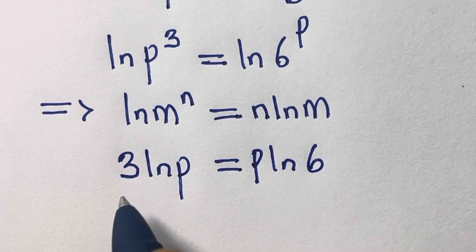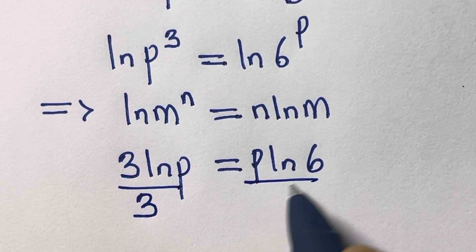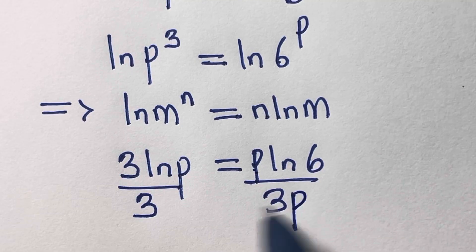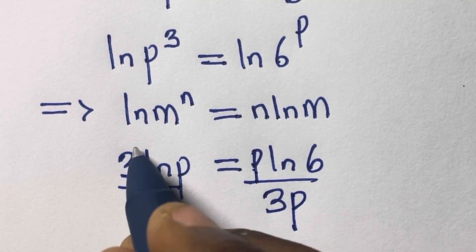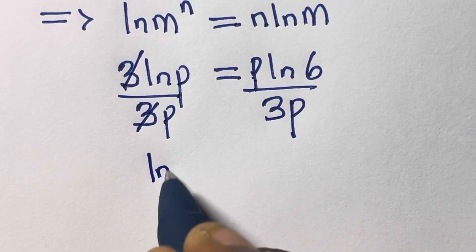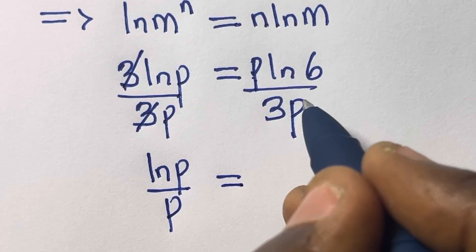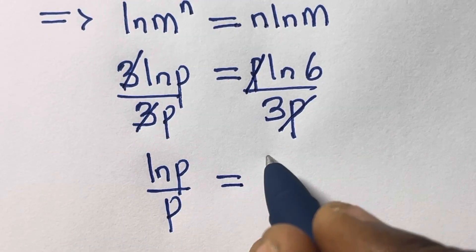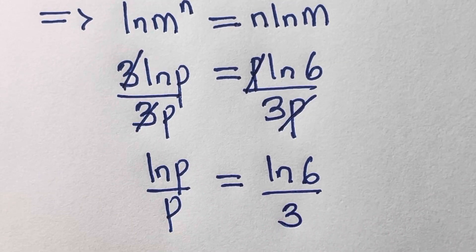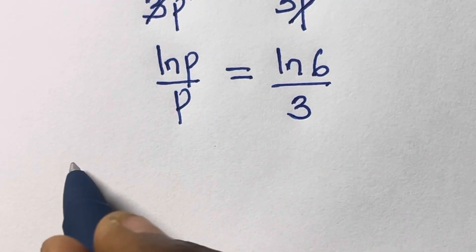What we are going to do here is divide both sides by 3, and then divide both sides by p as well — so p cancels. We have ln(p) divided by p equals ln(6) divided by 3.